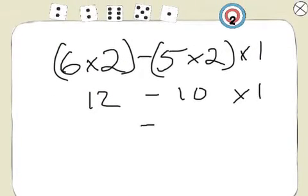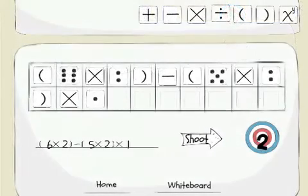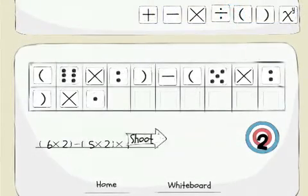the app requires students to use higher order thinking to solve the target number by working backwards, given the answer, but not the equation.